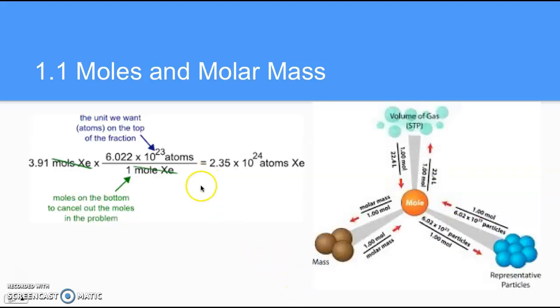The process looks like this. You take the given quantity, set up a conversion factor of mole equivalents, and solve for the unknown, in this case atoms of xenon. And to help with this process, I put this roadmap for conversions right over here. So you can just simply look and see, what am I given? What am I looking for? And follow the conversion factor to get there.